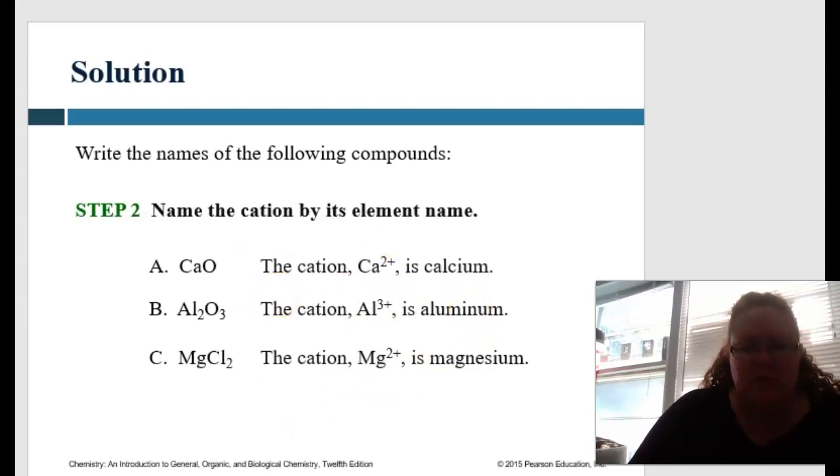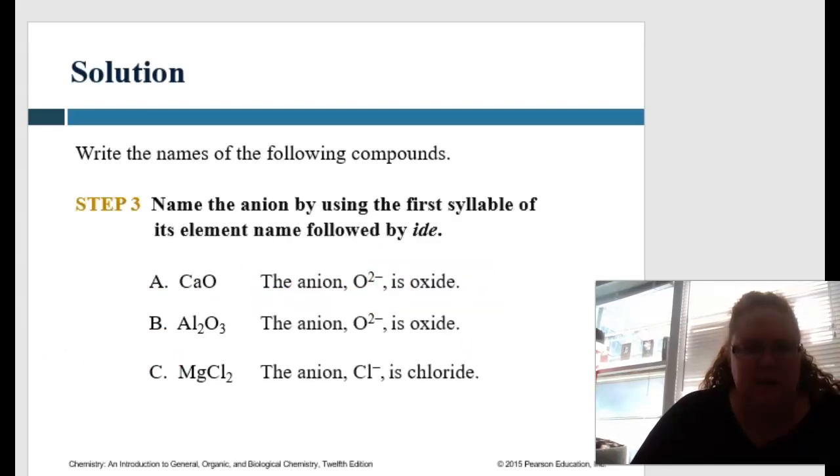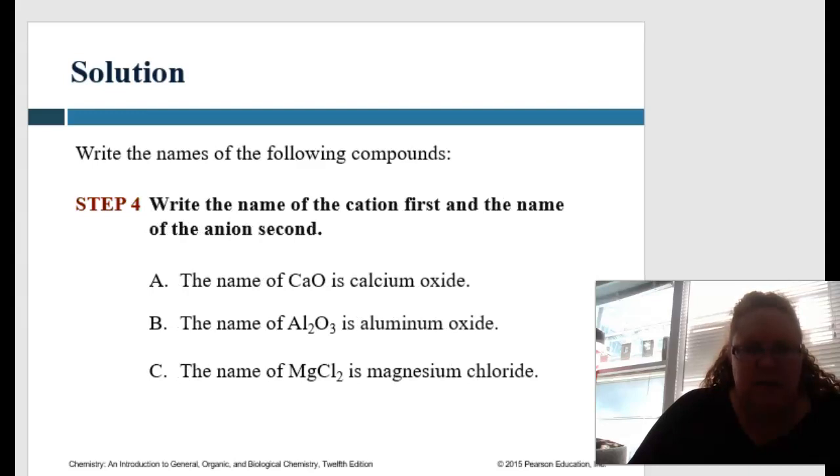So calcium, aluminum, magnesium, and then oxide, oxide, and chloride, because we're using that first part, and then adding the -ide to the end of it. Okay, and then a cation first, and anion second. So CaO would be calcium oxide, aluminum oxide, magnesium chloride. Okay, so pretty good.